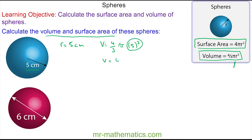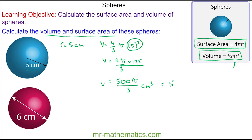So the volume is four-thirds of π multiplied by 125. We can simplify this by multiplying the 4 and 125, giving us 500π over 3. This is the answer as a multiple of π in centimeters cubed. We can approximate it as a decimal: 524 centimeters cubed to three significant figures.